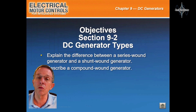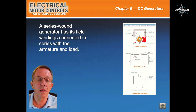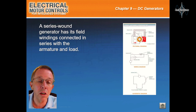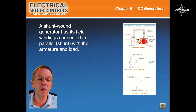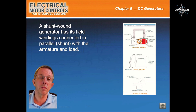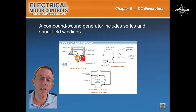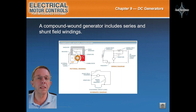Section 9.2, DC generator types. A series-wound generator has its field windings connected in series with the armature and the load. A shunt-wound generator has its field windings connected in parallel, or shunt, with the armature and load. A compound-wound generator includes series and shunt field windings.